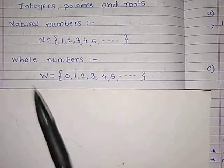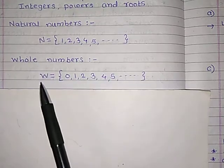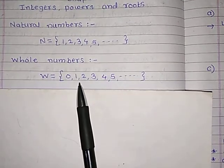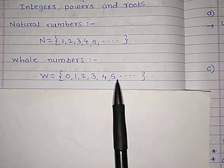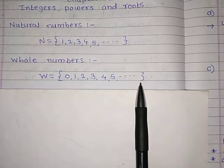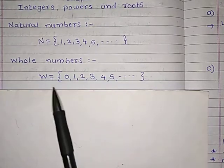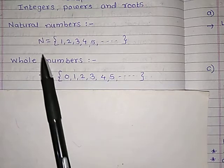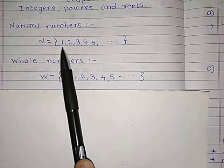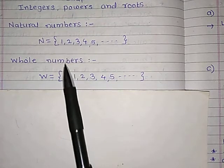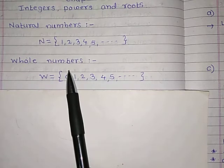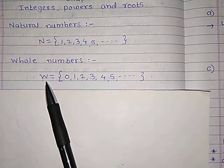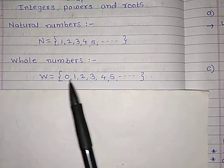Now, whole numbers. Whole numbers are 0, 1, 2, 3, 4, 5 and so on. So whole numbers include 0, whereas natural numbers don't include 0. That is the difference between whole numbers and natural numbers, and whole numbers are indicated by the letter W.